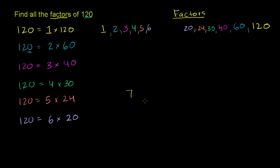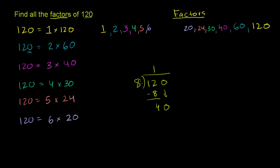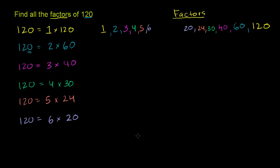Now let's think about whether 8 works. Let's take 8 into 120. 8 goes into 12 one time, 1 times 8 is 8, subtract — 12 minus 8 is 4, bring down the 0. 8 goes into 40 five times, 5 times 8 is 40 — no remainder. So 120 is equal to 8 times 15.